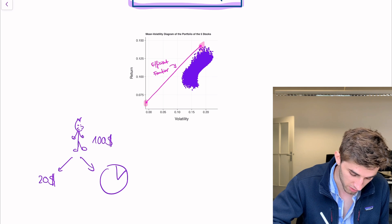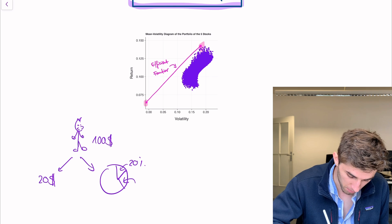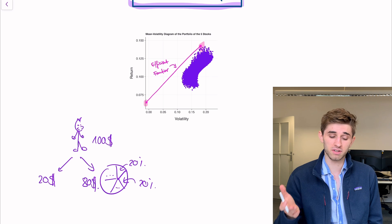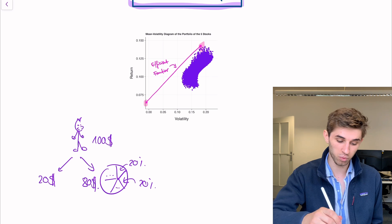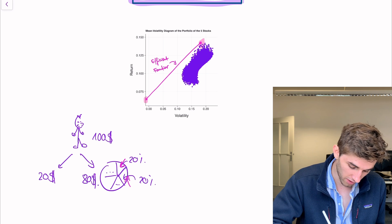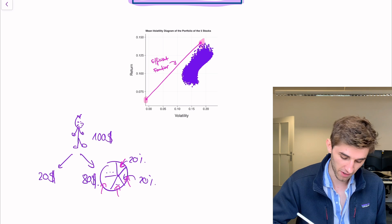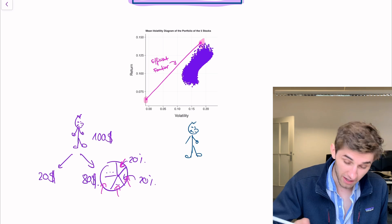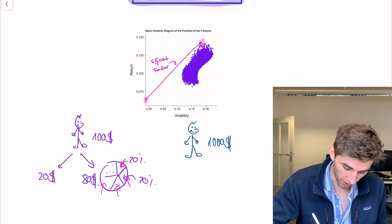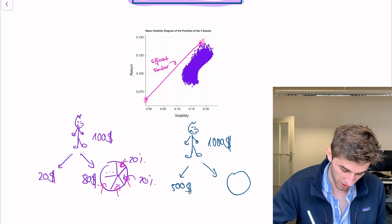And this tangency portfolio is a very particular combination of all risky assets out there. So it could be 20% of the Tesla stock, 20% of the Apple stock and so on. So out of the $80 she puts into the tangency portfolio, she puts 20% of that into the Tesla stock, 20% of that into the second stock and so on. So let's consider Mike. He's another mean variance investor and he's also on the market. And he has $1,000 to invest. And he puts $500 of that into the riskless bond and $500 into the tangency portfolio.